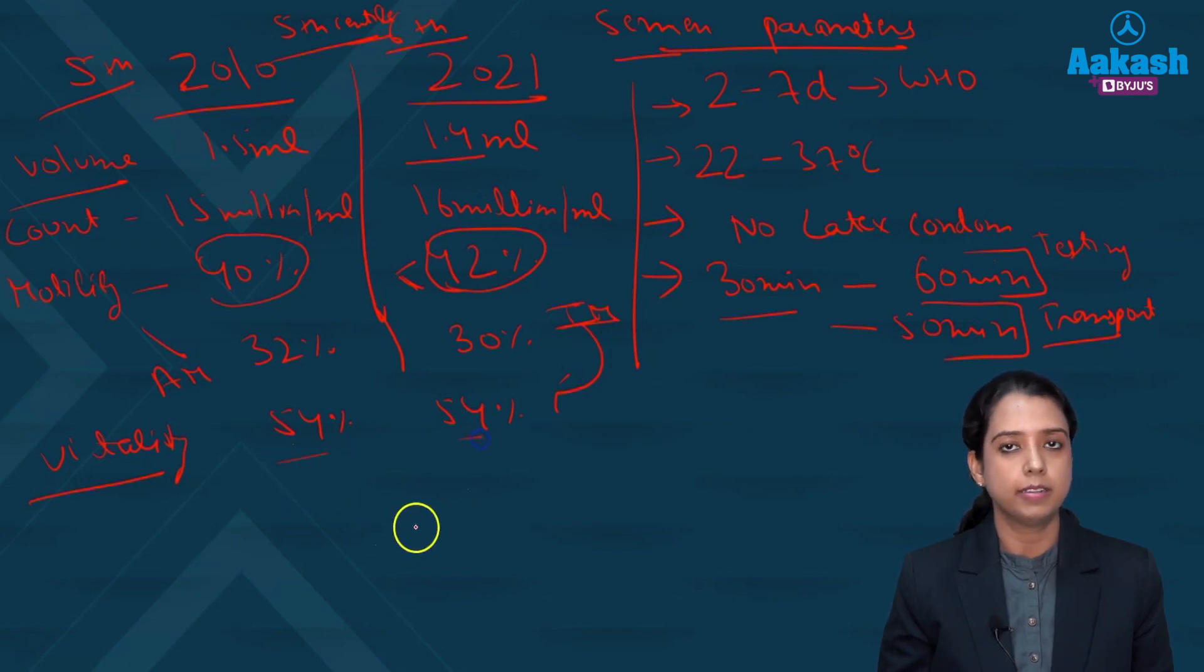Then you check for this vitality. So this number is constant. The most important parameter in any semen analysis is morphology. Morphology number is still same 4 percent. So more than 4 percent sperms should be morphologically normal. So these are the changes.